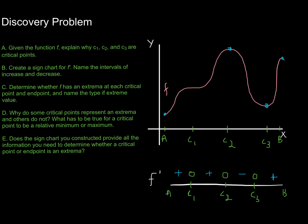The sign chart we constructed gives all the information needed to determine whether a critical point or endpoint is an extremum. To determine whether it's an absolute extremum, I still need to plug the particular critical values c₁, c₂, or c₃ back into my function to find which has the greatest or smallest value.